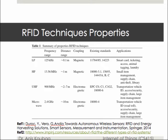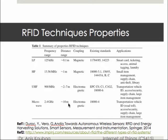RFID systems throughout the world operate in low frequency (LF), high frequency (HF), or ultra high frequency (UHF) bands, as well as microwave frequency at 2.4 GHz. Radio waves behave differently at each frequency with associated advantages and disadvantages. Lower frequency systems have a shorter read range of around 10 cm and slower data rates but better performance near metal or liquid surfaces. Higher frequency systems have faster data transfer and longer ranges, but are more prone to radio wave interference from liquids or metal in the environment.